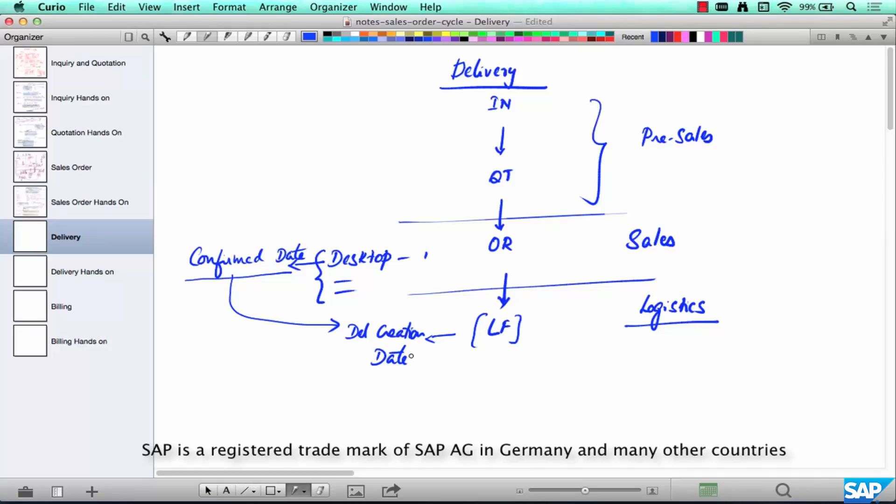Once you got that, then you can create a delivery and all the line items over here, one or more than one with that date. If there is a line item, say desktop or laptop,